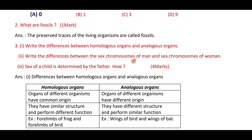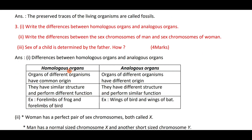What is the difference between sex chromosomes of man and sex chromosomes of woman? The sex of the child is determined by the father. How? Homologous organs are those of different organisms having a common origin. Analogous organs have a different origin.